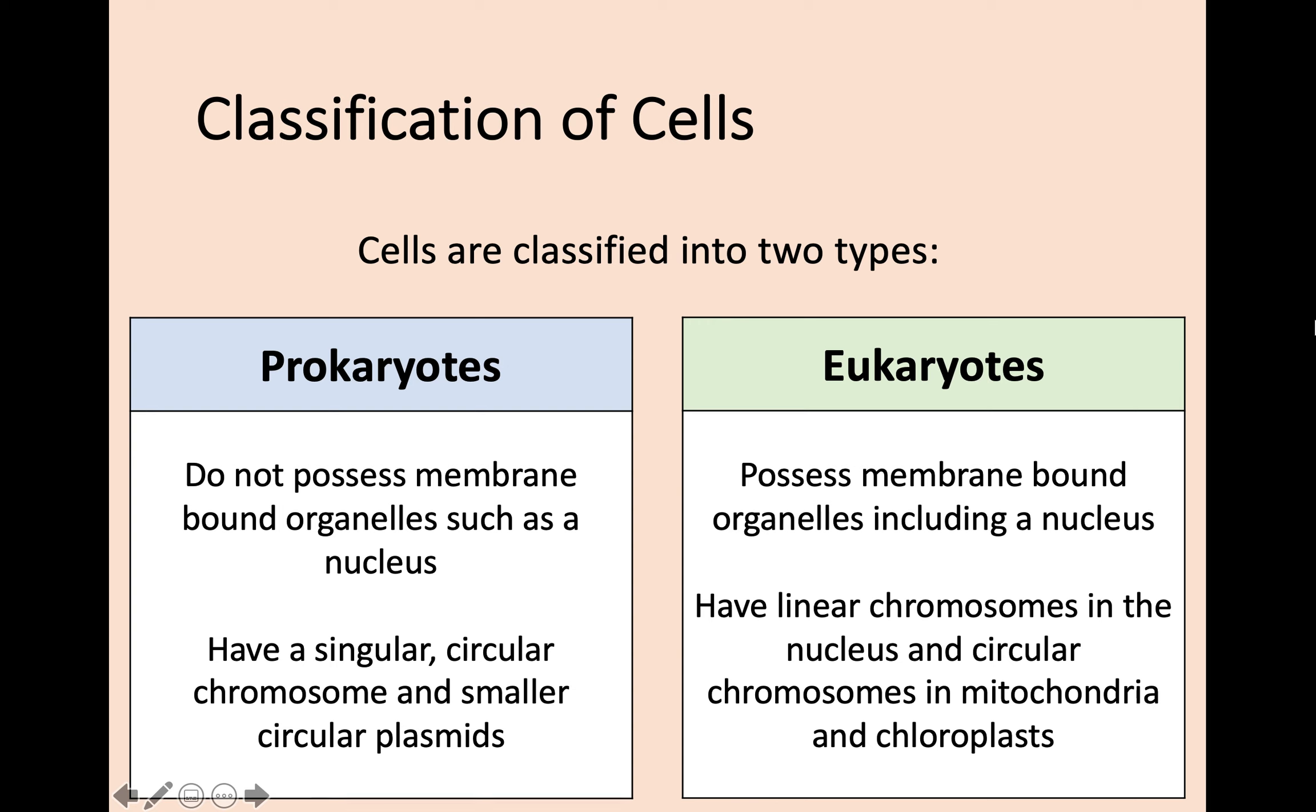They possess membrane-bound organelles including a nucleus, and within that nucleus they have linear chromosomes. But what they also have for genetic information within the cell is circular chromosomes found in organelles such as mitochondria and chloroplasts. Two key differences: first, prokaryotes do not have a nucleus and eukaryotes do have a nucleus. You can even think of pro-karyotes—pro is no, in terms of no nucleus. And in eukaryotes you do have a nucleus.